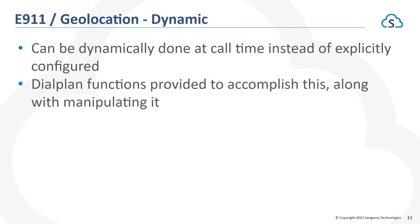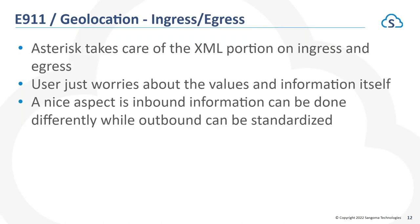We also allow geolocation to be done dynamically at call time using dial plan functions — for example, you may have location information in an outside database that you want to query. You can use the dial plan functions to populate that, and Asterisk will take care of moving it into the correct geolocation representation. We handle the XML portion both for receiving and outgoing, so from a user perspective you just have to worry about the values and information being in the right format for the provider.